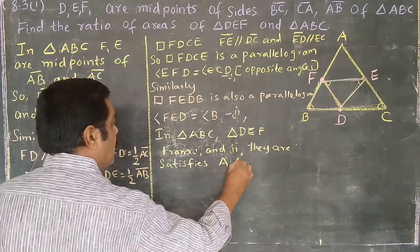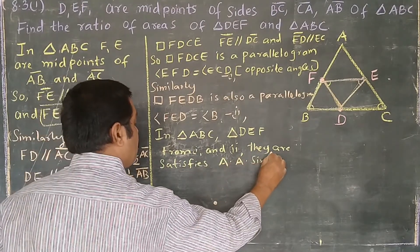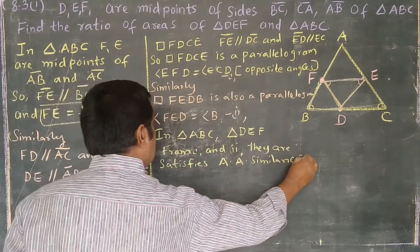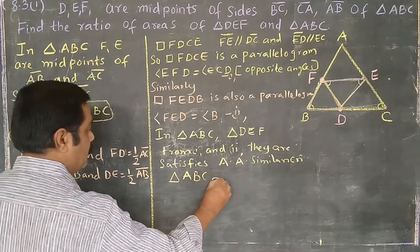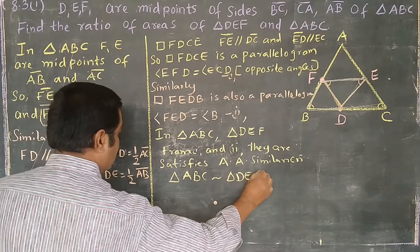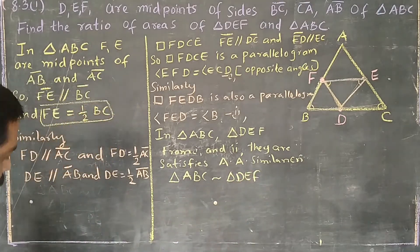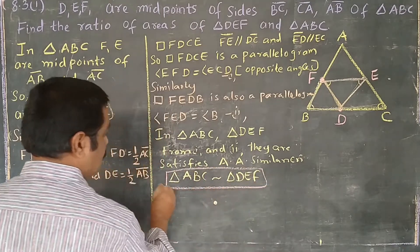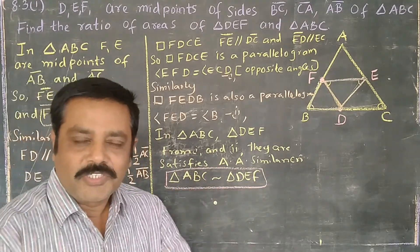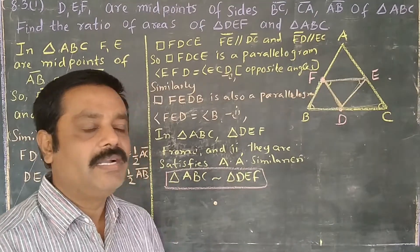Now I am going to compare this small triangle and this previous triangle. In triangle ABC and triangle DEF, angle B is equal to angle E, angle C is equal to angle F. So from first and second equation they satisfy AA similarity criteria. These two triangles are similar.